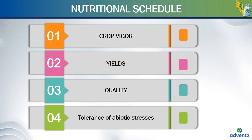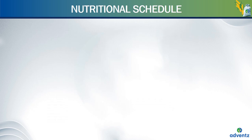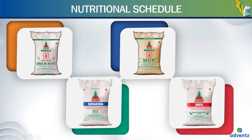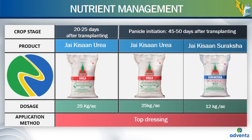The next two products are applied 20 to 25 days after transplanting and again 45 to 50 days after transplanting, which is called panicle initiation stage. At 20 to 25 days after transplanting, we apply Jai Kisan Urea to the rice crop at the rate of 25 kgs per acre. At the time of panicle initiation, which occurs 45 to 50 days after transplanting, we apply Jai Kisan Urea at 25 kgs per acre and Jai Kisan Suraksha at 12 kgs per acre. Both are applied by way of top dressing.